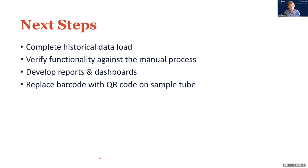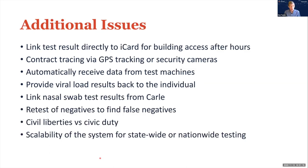We are right in the process of completing the historical data load. We have to run the pipeline and verify it against the manual process, develop more reports and dashboards, and think about better information handling. For example, if we change from a barcode on the test sample label to a QR code, we can pack in more information and have better data quality. Future ideas include linking testing information directly to your iCard for automatic building access, contact tracing via GPS, using security cameras on campus, and automating transmission of data directly from the test machine into the pipeline.